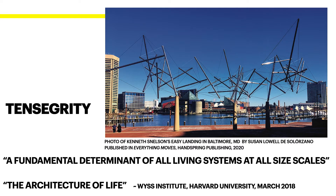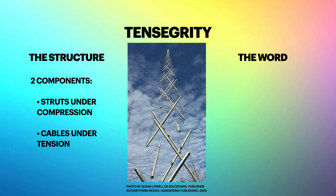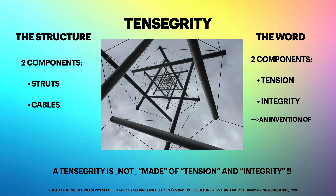A lot of people are looking at this. It's important to distinguish between tensegrity as a structure and tensegrity the word, because people get really confused. Any tensegrity structure has two components: the struts that are under compression, and the cables that are under tension. But tensegrity the word also has two components — tension and integrity — two different words. Buckminster Fuller combined them in something called a portmanteau, making up the word. But a tensegrity is not made out of tension and integrity, because those are not building materials.